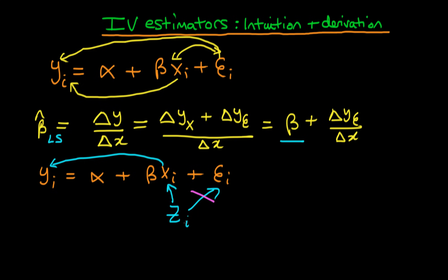So let's think about a particular example. Let's say that z increases by one unit. And if z increases by one unit, perhaps that causes x to go up by 0.5 units, which in turn causes y to go up by two units. So what would be the instrumental variables estimate for the parameter beta in this circumstance?